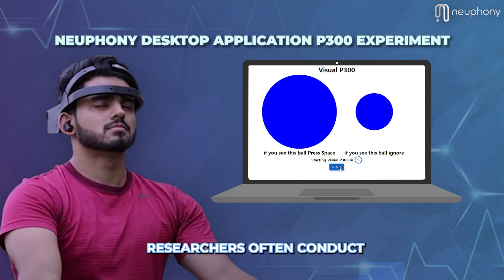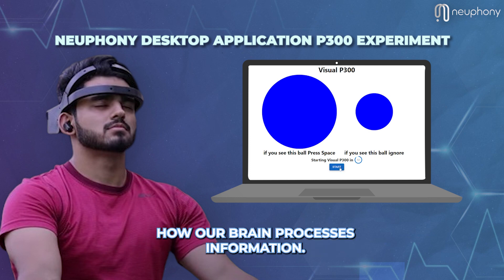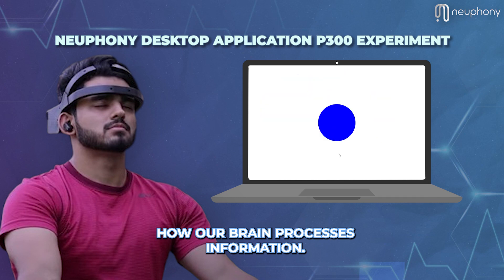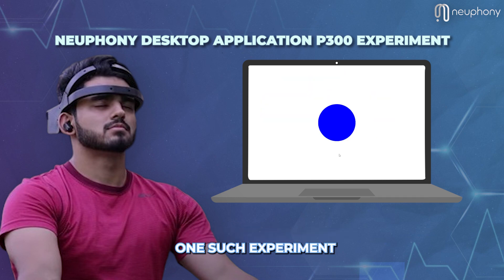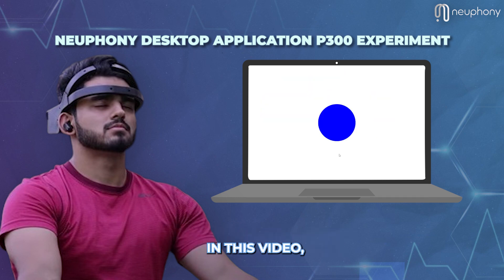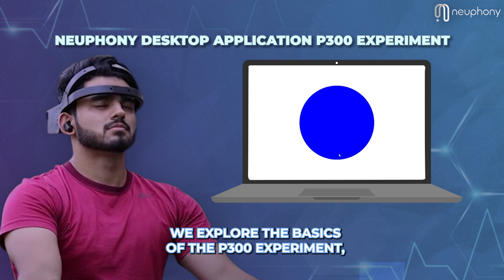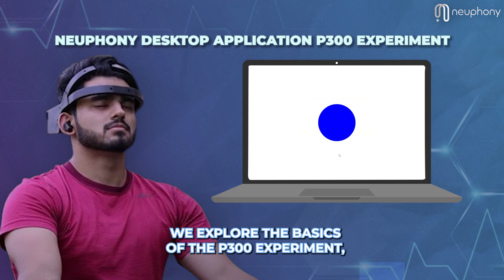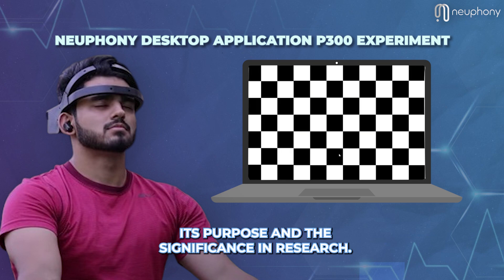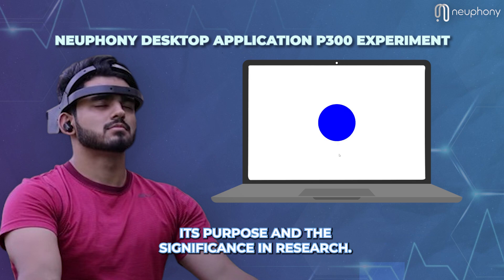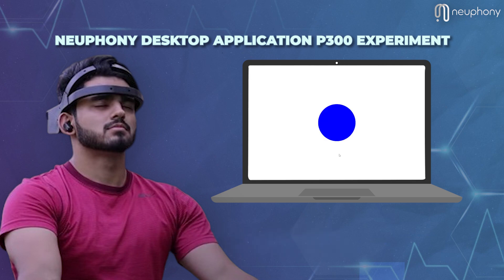In the field of neuroscience, researchers often conduct experiments to understand how our brain processes information. One such experiment is called the P300 experiment. In this video, we explore the basics of the P300 experiment, its purpose, and its significance in research.